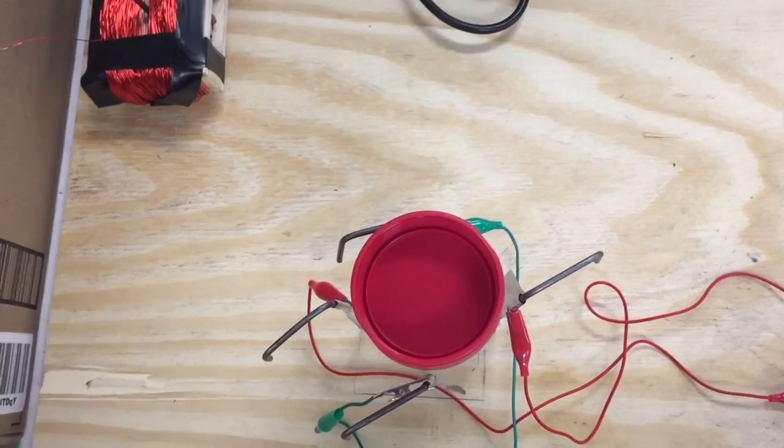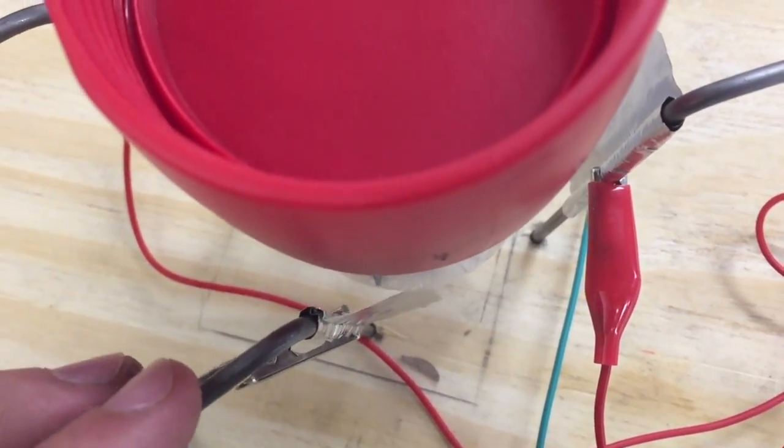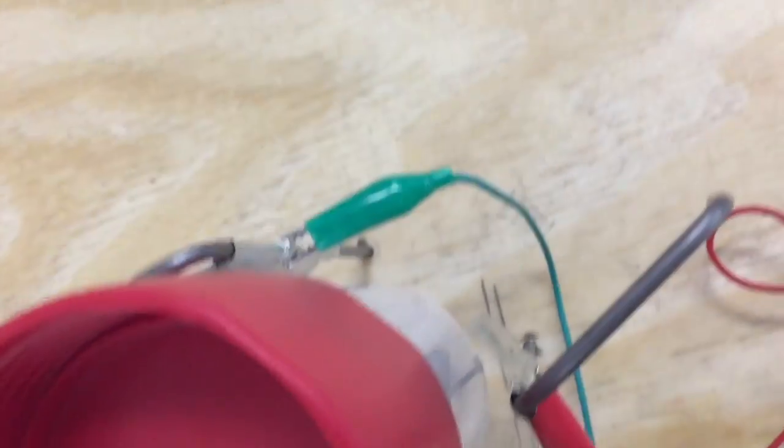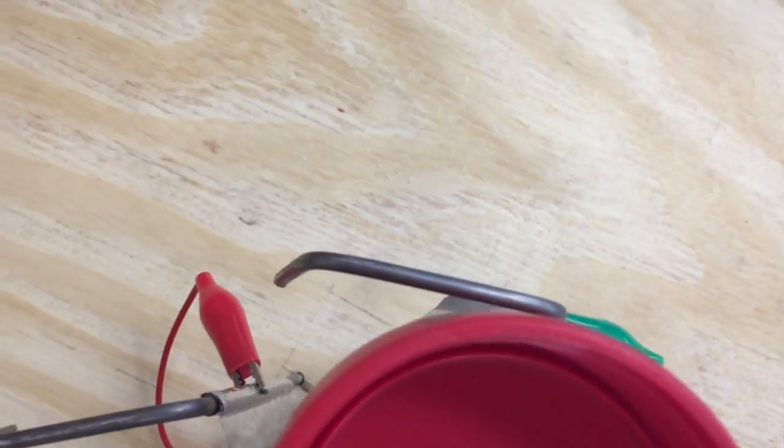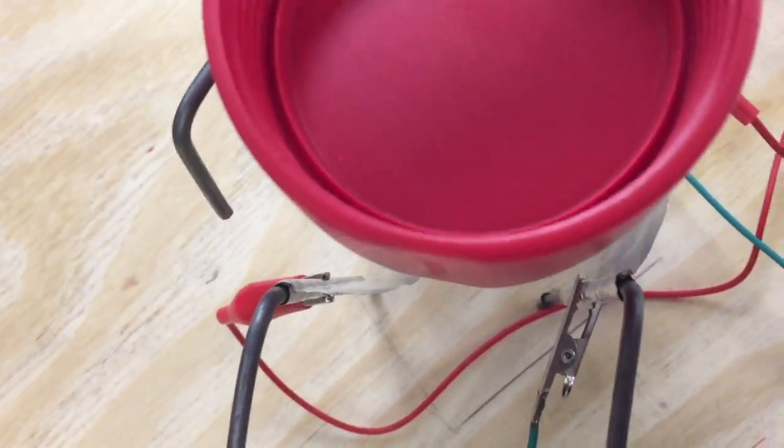The way the corona motor works is, once we apply enough voltage to it, a negative electrode is going to shoot off a negative charge onto the cylinder. Remember, the cylinder is insulated, so the negative charge is going to want to escape from it.